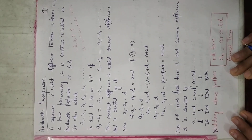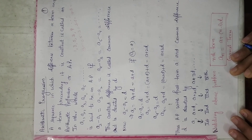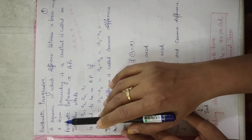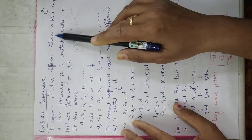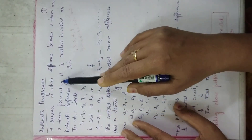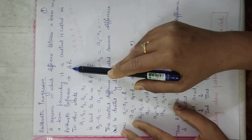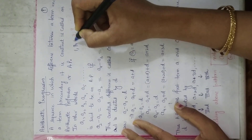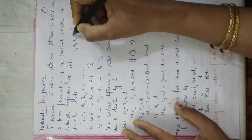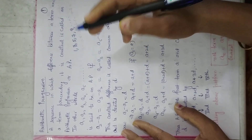Hello students. So what is an AP? AP is a sequence in which the difference between a term and the term preceding it is always constant. That is called an AP. For example, if you have 1, 3, 5, 7, 9 and so on, then you can see this is an AP.